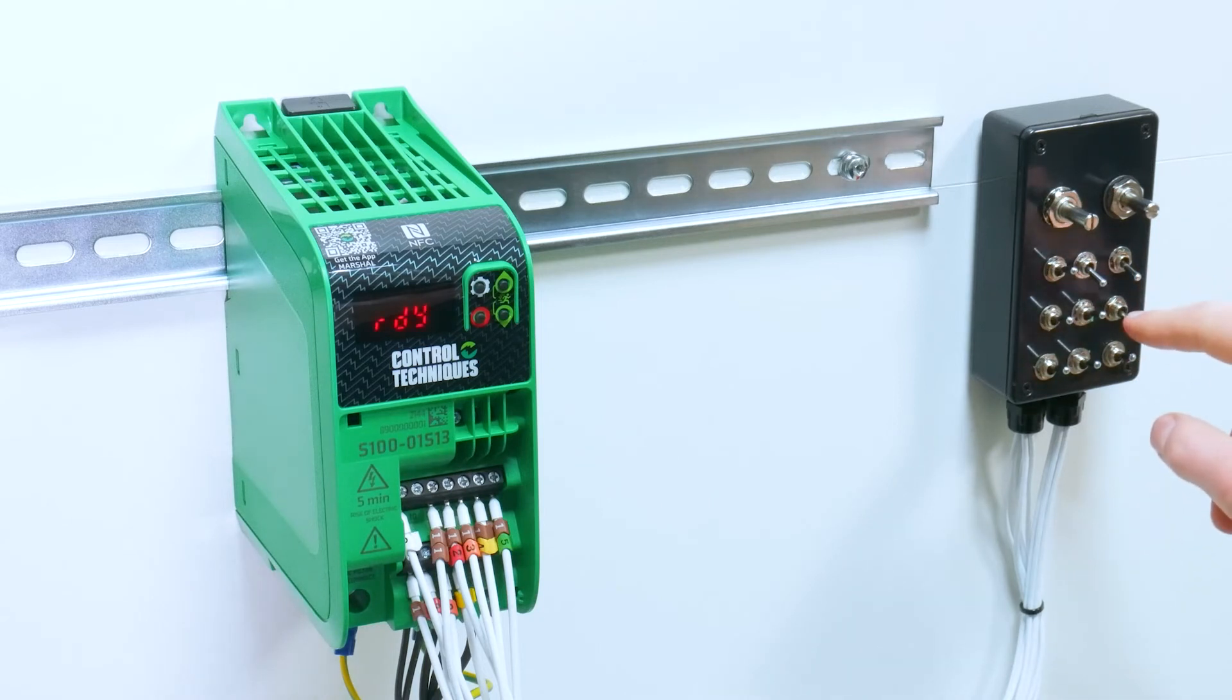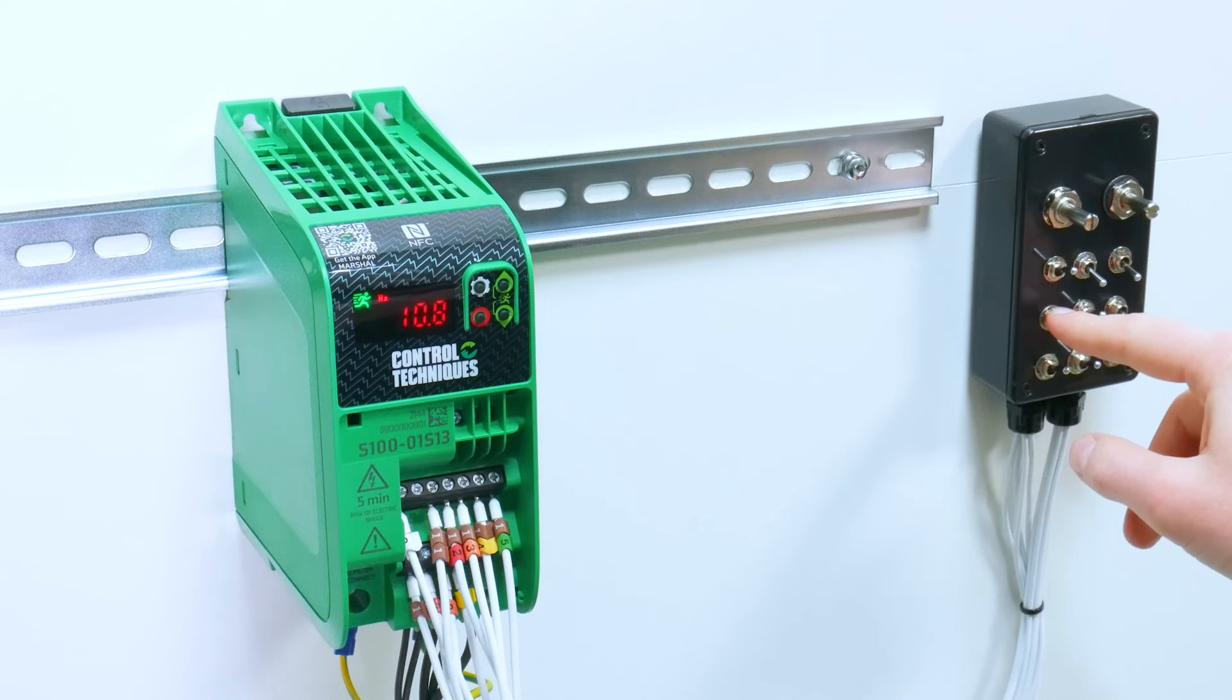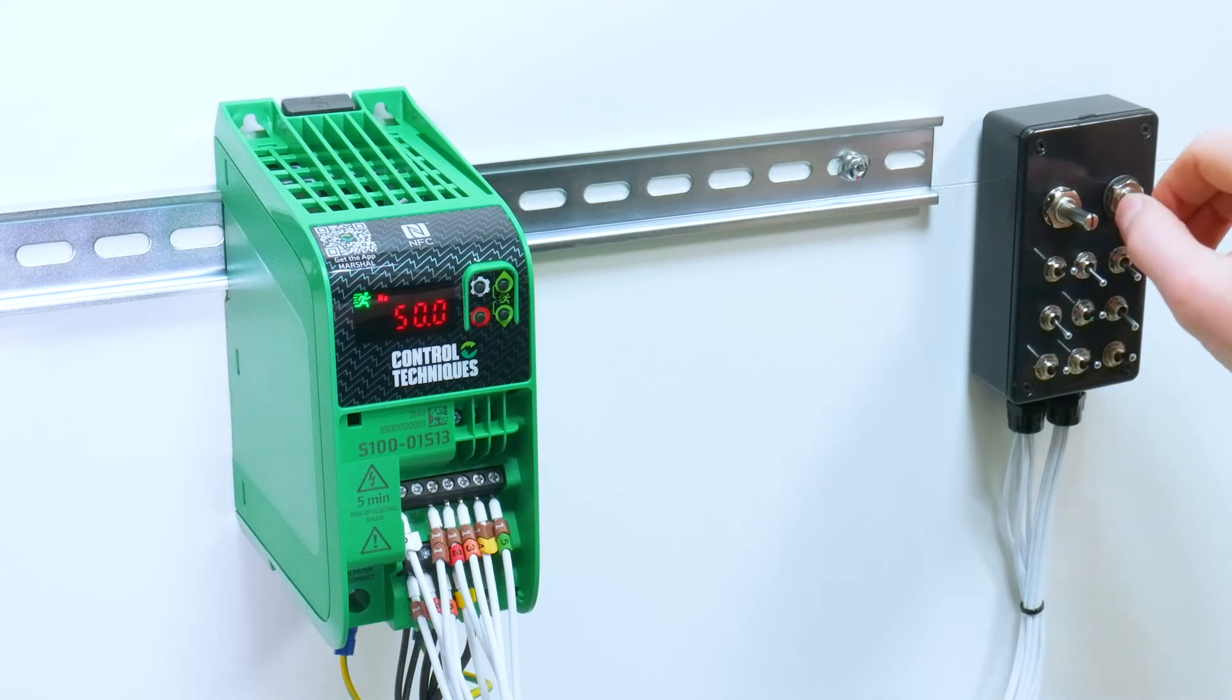I then give the drive the run signal and it'll run up to my maximum frequency limit if I'm applying 100% of my reference. I can then tweak that and decrease the speed of the motor, and then remove the run forward signal.